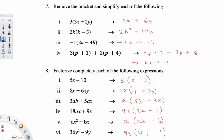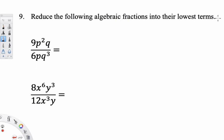We move on to question 9, where we reduce algebraic fractions to their lowest terms. I can divide 9 and 6 by 3, giving 2 on the bottom and 3 on the top. I can cancel one of the P's from the numerator with the one in the denominator, leaving a single P on top. Then one Q cancels with one of the three on the bottom, leaving Q squared. So overall the answer is 3P over 2Q squared.